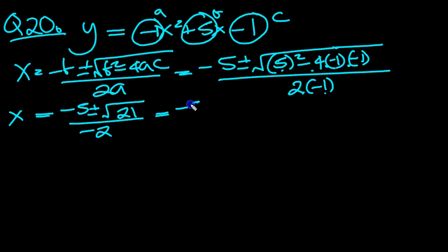So what have we got then? We've got minus 5, plus the square root of 21, over minus 2. Or we've got minus 5 minus the square root of 21, over minus 2.